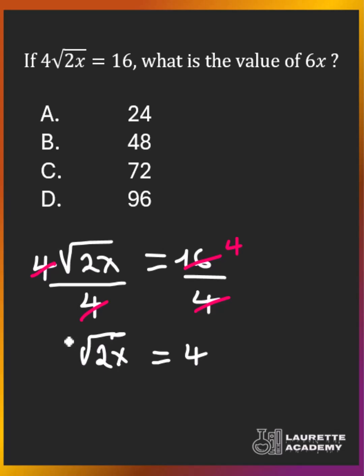To remove the square root sign, we apply the inverse operation of finding the square root, which is squaring. So we square both sides of the equation. When we do that, we will have that 2x is equal to 16. When we divide both sides by 2, we have that x is equal to 8.